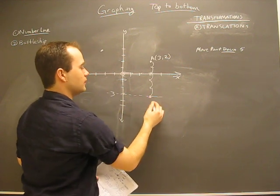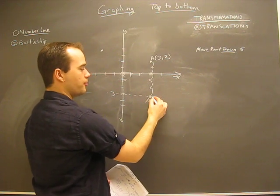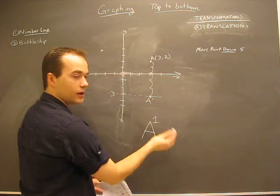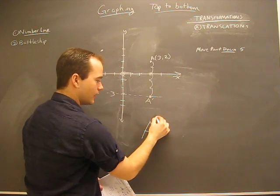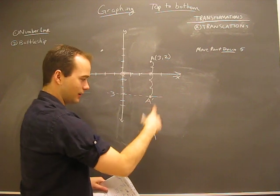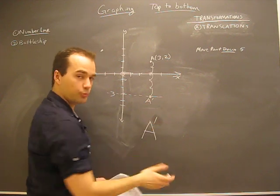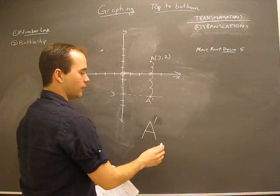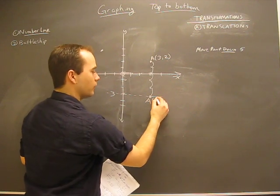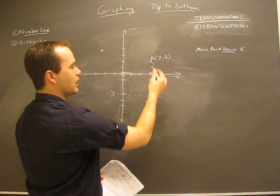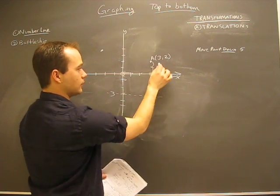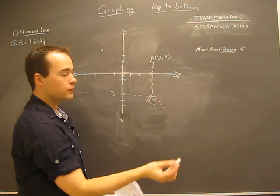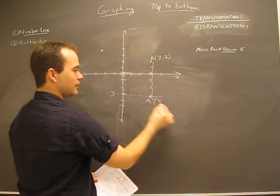So the new point, we'll call a new point A prime. That little line is not a number one. It's like a little dash, just a little line like that. So that means A prime and what it means is that it's the new version of the graph. So A prime here, what is A prime? A prime now has an x value of three still because we're still right here. But the y value is now negative three.